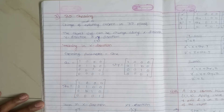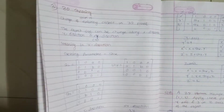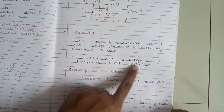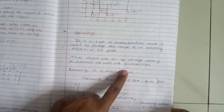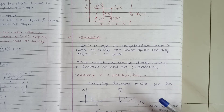In this lecture, we will continue with the third type of 3D transformation, that is shearing. So what is shearing? Shearing is nothing but change of shape of an existing object in 3D plane. Here we can change the shape in 3D plane just like 2D shearing. The object size can be changed along x, y, and z direction.